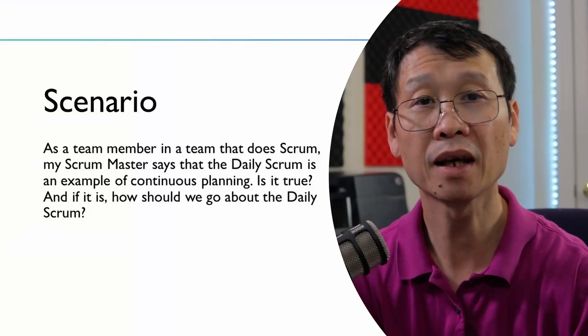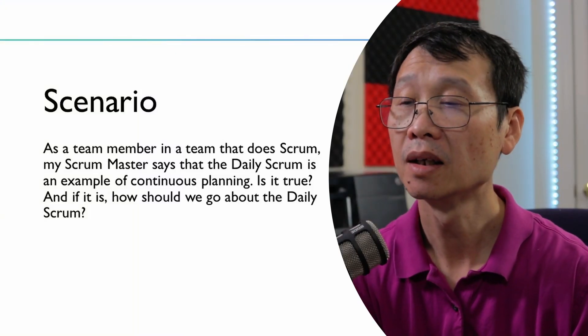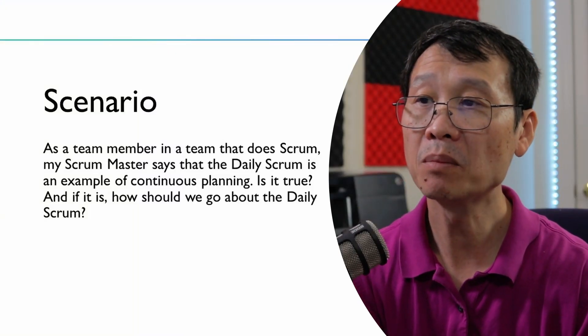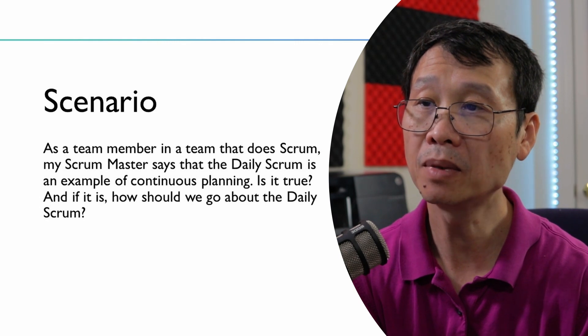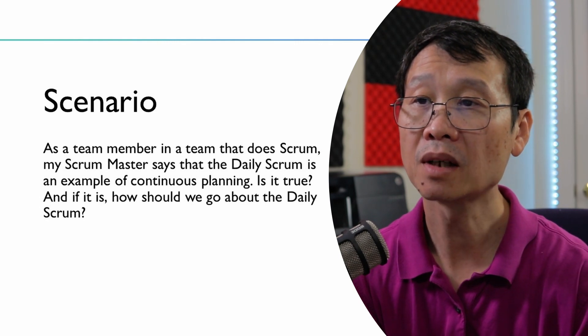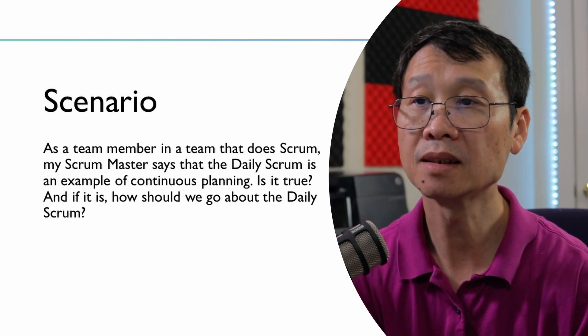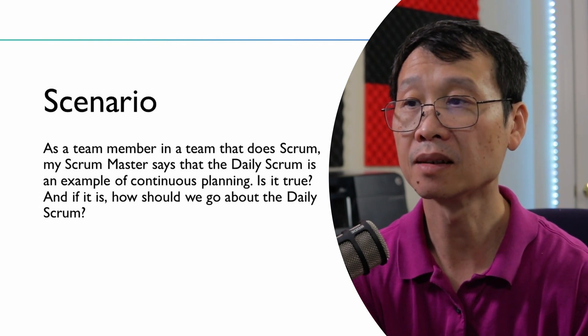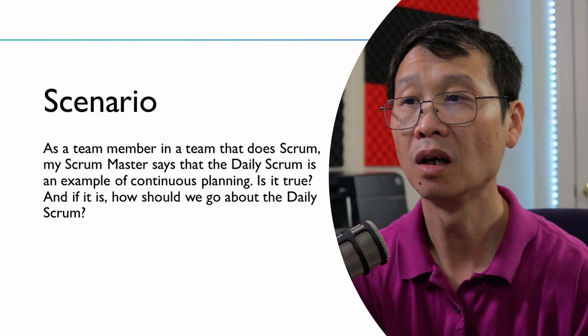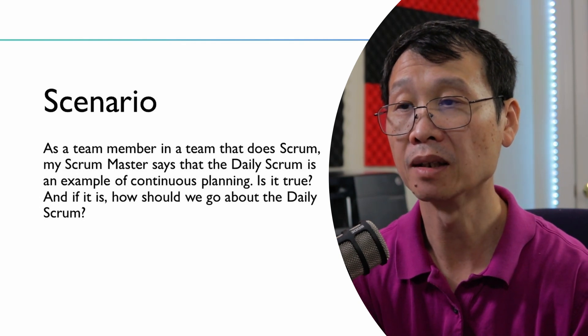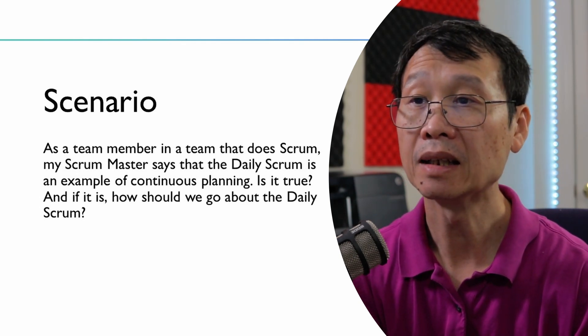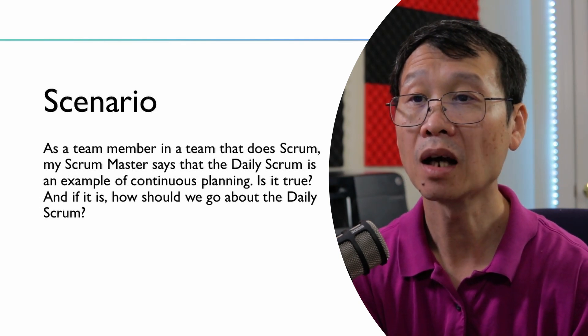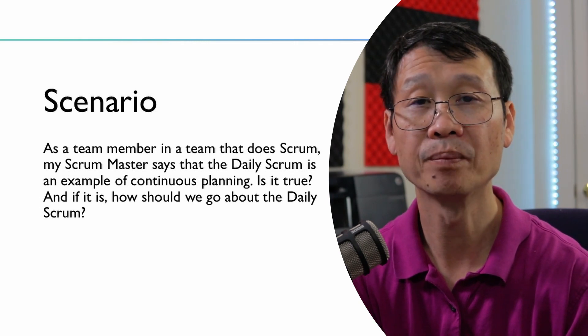Let's go ahead and read it. As a team member in a team that does Scrum, my Scrum Master says that the daily Scrum is an example of continuous planning. Is it true? And if it is, how should we go about the daily Scrum? This is kind of very interesting in my mind.